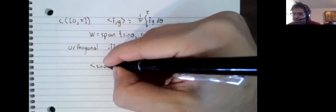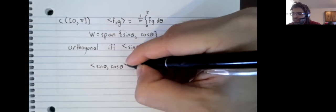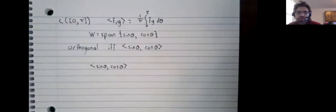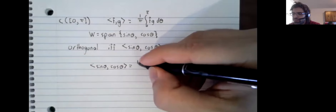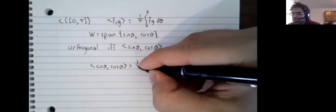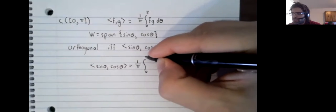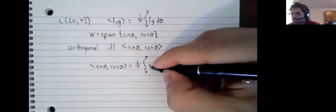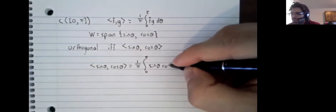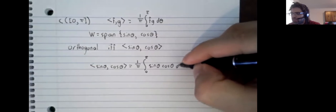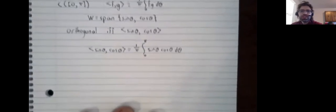So this suddenly becomes a calculus exercise. This inner product is one over pi times the integral from zero to pi of sine of theta times cosine of theta d theta.